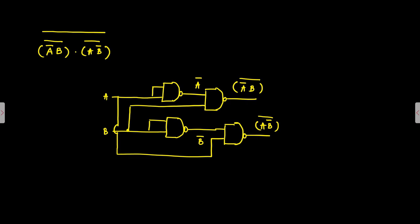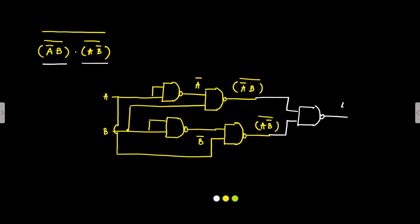We have both parts: (A̅B)̄ and (AB̅)̄. Now we apply these two to another NAND gate, and the result is the expression [(A̅B)̄ · (AB̅)̄]̄, which equals A̅B + AB̅. This is exactly the Sum output we need.